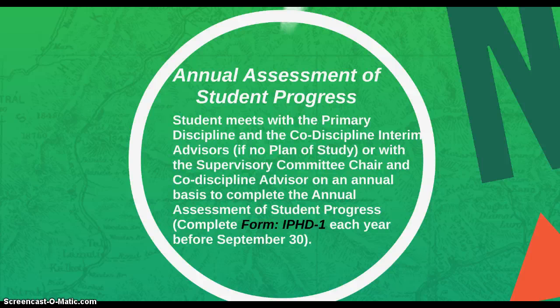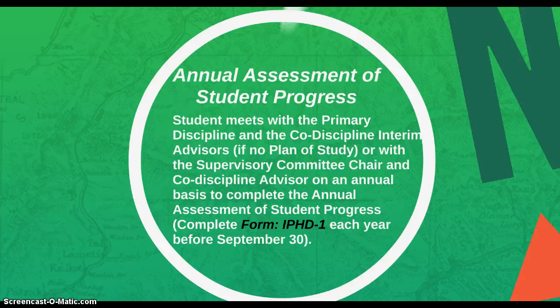The Annual Assessment of Student Progress is an opportunity for the student to meet with their primary discipline and co-discipline advisors on an annual basis to review progress and plans for the upcoming year. Form IPHD 1 is the Annual Assessment of Progress that needs to be submitted to the School of Graduate Studies before September 30 each year.